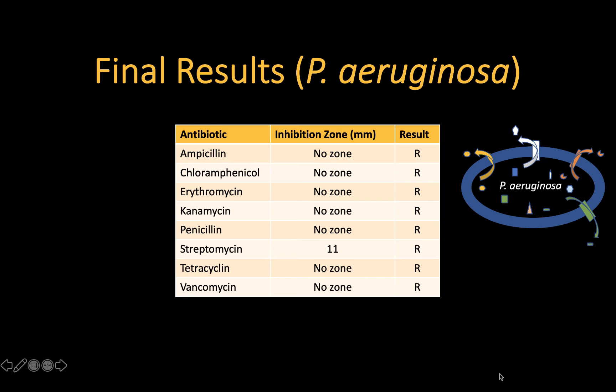If there are no antibiotics to which the pathogen is fully susceptible, it may be possible to use the maximum recommended dose of antibiotics to which the pathogen is intermediately susceptible.